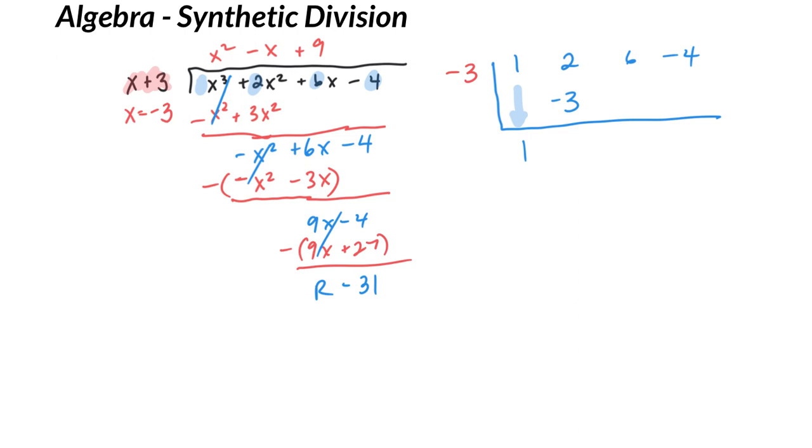instead of subtracting, we're going to add. So if you want to make like a little thing here, we are adding all of our numbers. So 2 plus negative 3 is negative 1.